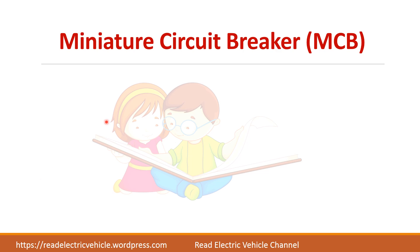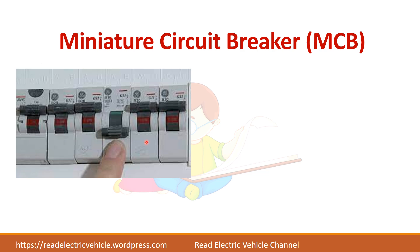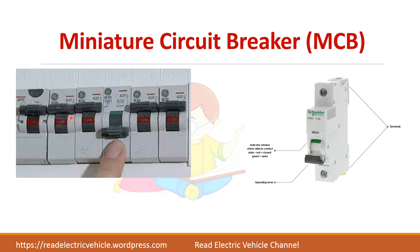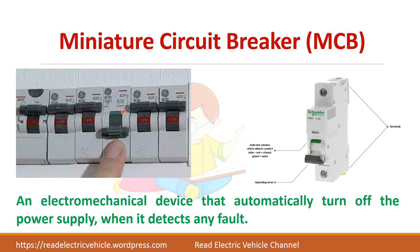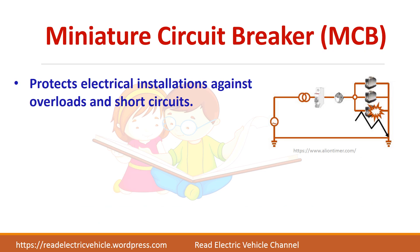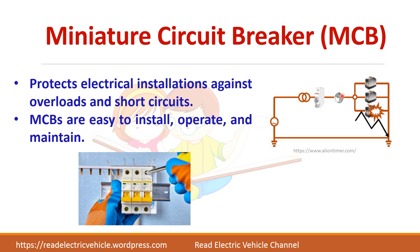Next, we have the miniature circuit breaker, or MCB, which has replaced the fuse to a large extent. There are two positions in a circuit breaker: the on position and the off position. Whenever there is a fault, the circuit breaker will trip automatically and come down. The MCBs are used to protect against overload and short circuit. After you clear the fault, you can manually switch it back on. They are easy to install, operate, and maintain.